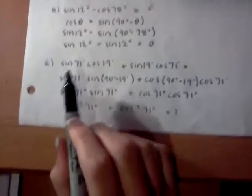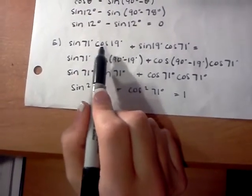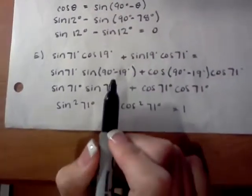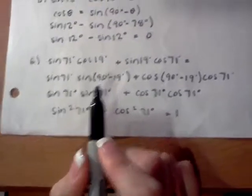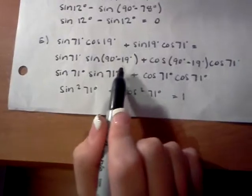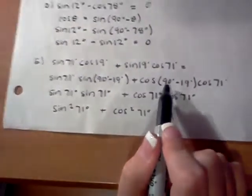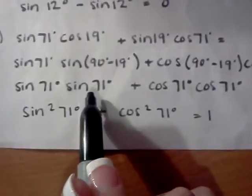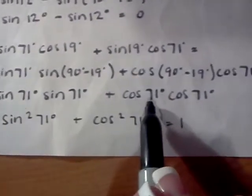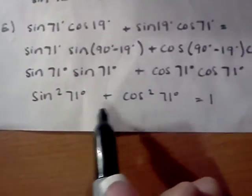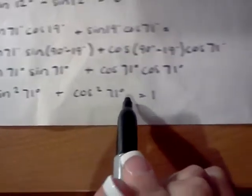For the fifth one, sine of 71 times cosine of 19 plus sine of 19 times cosine of 71, we'll use the complementary angle theorem. You get sine of 71 times sine of 90 minus 19 plus cosine of 90 minus 19 times cosine of 71. That simplifies to sine of 71 times sine of 71 plus cosine of 71 times cosine of 71, which equals sine squared 71 plus cosine squared 71, which equals 1.